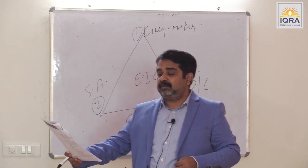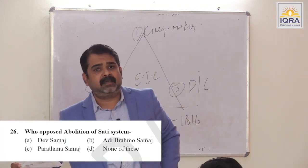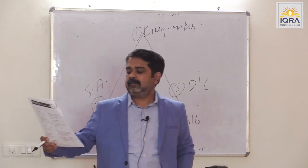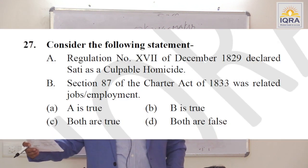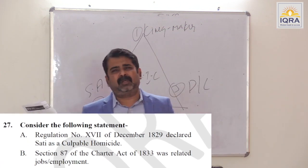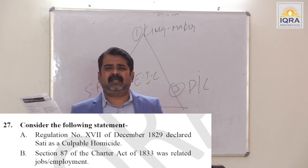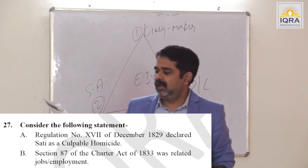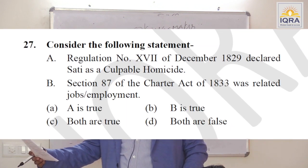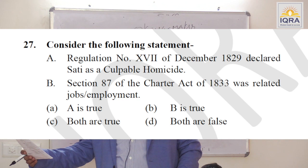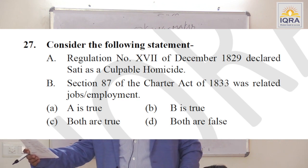Who opposed abolition of Sati system? Dev Samaj, led by Radha Kant Dev. Regulation Number 17 of December 1829 declared Sati as culpable homicide — true. Every fact of this regulation is important because Sati system was a very big menace for the female gender. Section 87 of the Charter Act of 1833 was related to jobs — true. Answer is C.